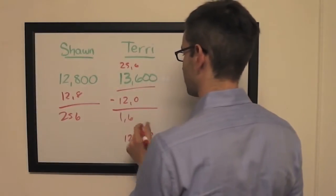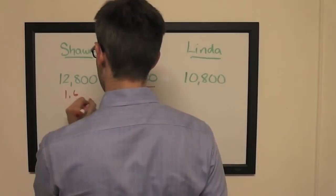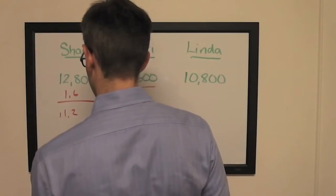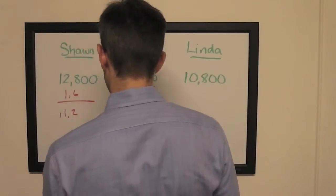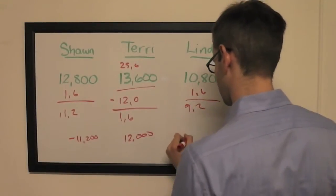If she's wrong with that wager, she'll be left with $1,600. So that means Shawn, against her, can wager up to $11,200. And Linda can wager up to $9,200.